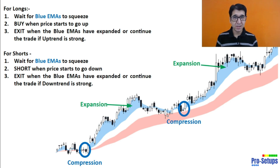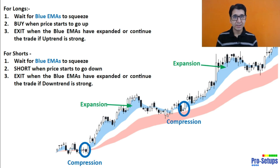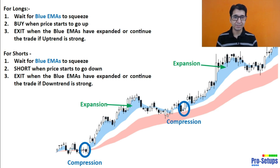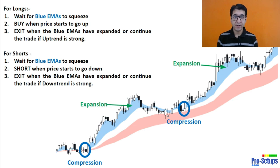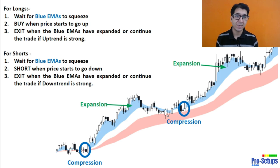However, compression and expansion is not the only part of the strategy — there are other factors we need to consider, such as the current trend of the stock, any chart pattern the stock is making, the level of volatility such as ATR, and multiple other factors. So now that we know that the first point of consideration is a compression of the blue EMAs, our next step is to identify when these compressions are happening.